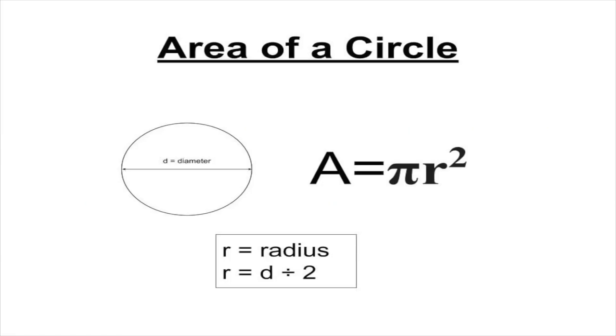To find the area of a circle, we first need to find the radius. The radius is half the diameter. So if I had a diameter of 2 meters in a circle, the radius would be 1 meter. To find the area then, you multiply pi, so again 3.14, times the square of the radius.